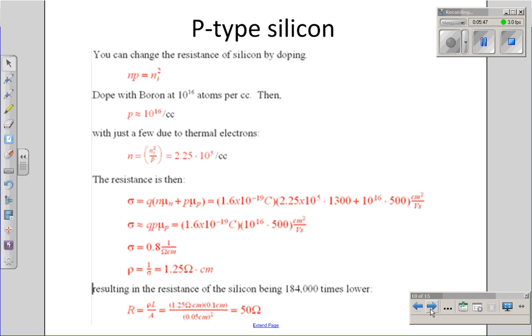However, that fourth electron is missing, creating a hole. As a result, the hole density in the doped crystal will be roughly 10 to the 16th atoms per cubic centimeter.